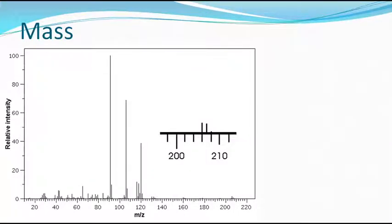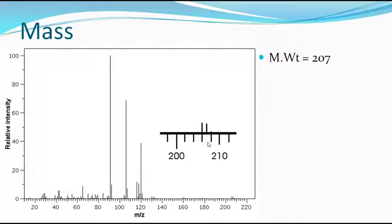This is the molecular weight of the compound. If you see, the molecular ion peak is very, very low intensity and therefore it is shown separately. If you see that the molecular weight looks like 207, and if you apply the rule of 13, it may come around C15, H15 plus 12, that is C15 and H27.